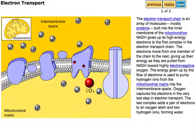Oxygen captures the electrons in the very last step in electron transport. The last complex adds a pair of electrons to an oxygen atom and two hydrogen ions, forming water.